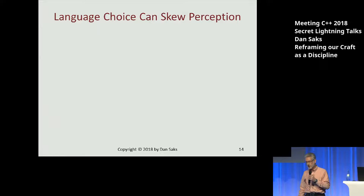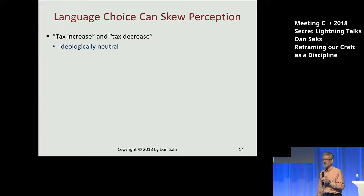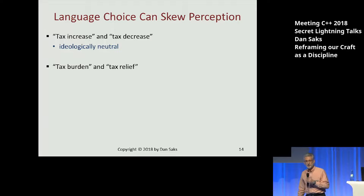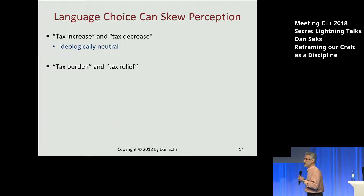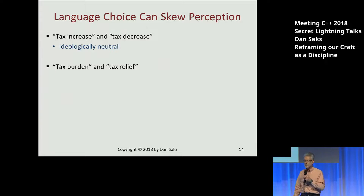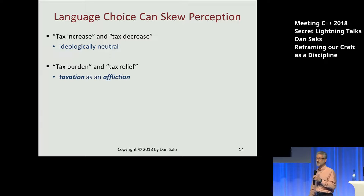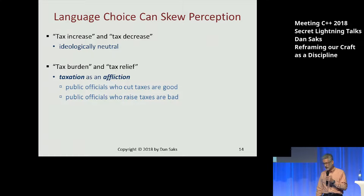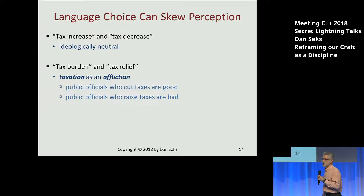You can use language to actually skew perception. Here's one example from American political culture. Twenty, thirty years ago, if you listened to a discussion about tax policy, people would talk about tax increases and tax decreases — ideologically neutral. But now, one party in the U.S. — the Republicans, who happened to be in favor of reducing taxes — realized they could bend the discussion in their favor by using the phrase 'tax burden' or 'tax relief.' What does that immediately conjure up? That taxation is an affliction, and that public officials who cut your taxes are good and those who raise them are bad. That's a frame.